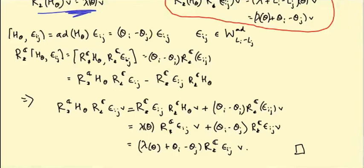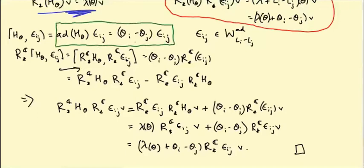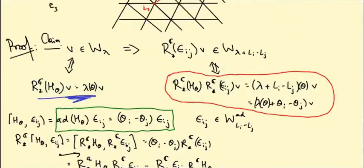The two key ingredients used were: first, that R* is a Lie algebra representation, which allowed us to bring it inside the bracket; and more importantly, that ad(H_θ)(E_{IJ}) = (θ_I − θ_J)·E_{IJ} — in other words, that E_{IJ} is a root vector (weight vector for the adjoint representation). More generally, the result says: if you act using any root vector of weight κ, the weight space with weight λ will move to the weight space with weight λ + κ.